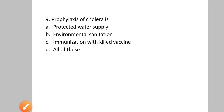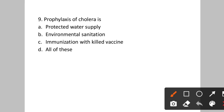Question number nine: The prophylaxis of cholera is? Option A: protected water supply. B: environmental sanitation. C: immunization with killed vaccine. D: all of these. The prophylaxis of cholera includes environmental sanitation. Option B will be the correct answer.